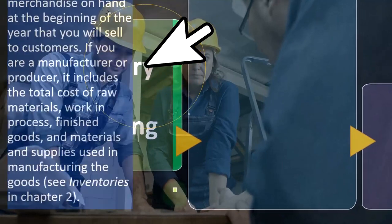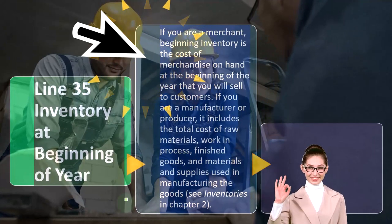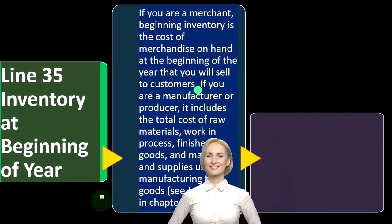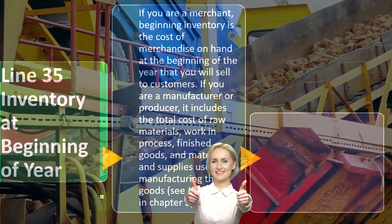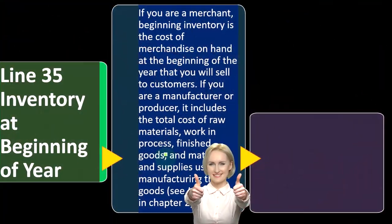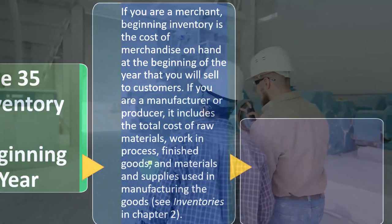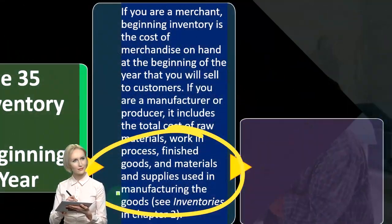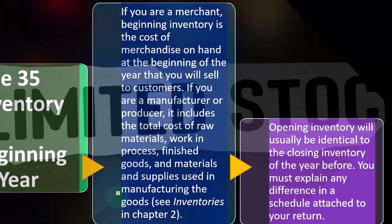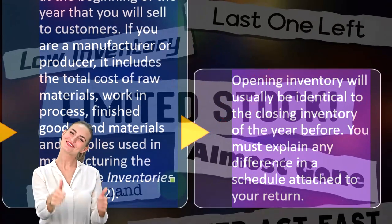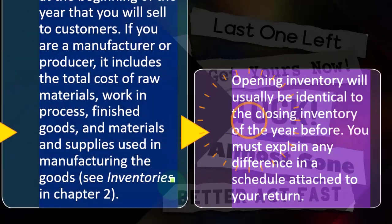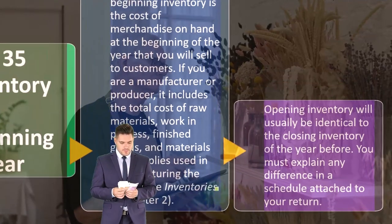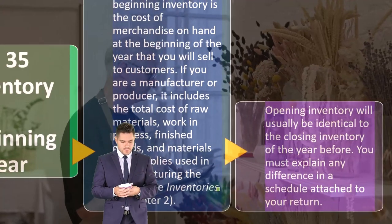Line 35 is inventory at the beginning of the year. If you are a merchant, beginning inventory is the cost of merchandise on hand at the beginning of the year that you will sell to customers. If you are a manufacturer or producer, it includes the total cost of raw materials, work in process, and finished goods — those three buckets: raw material when you're buying it, work in process when you're working on it, and finished goods when it's ready to sell — plus materials and supplies used in manufacturing. Opening inventory will usually be identical to the closing inventory of the prior year; you must explain any difference in a schedule attached to your return, as a discrepancy could be a red flag to the IRS.